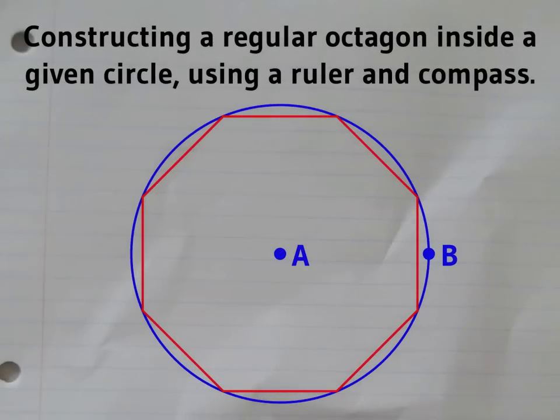Here's how you can draw a regular octagon inside a given circle using a ruler and a compass.